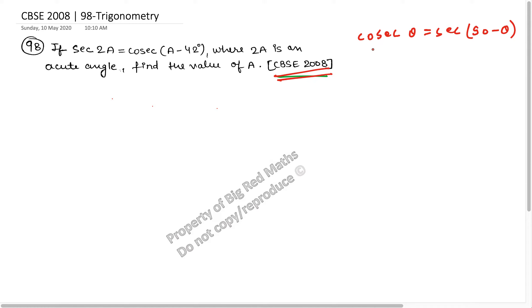Now if I apply this formula on the right-hand side here, I can write this cosec(A - 42°) as sec of 90 minus (A - 42). This becomes sec[90 - (A - 42)].